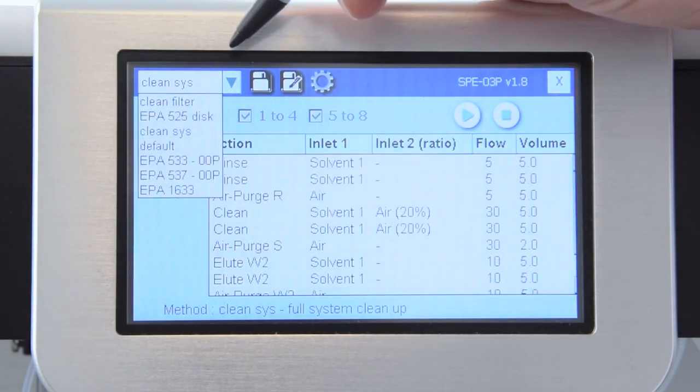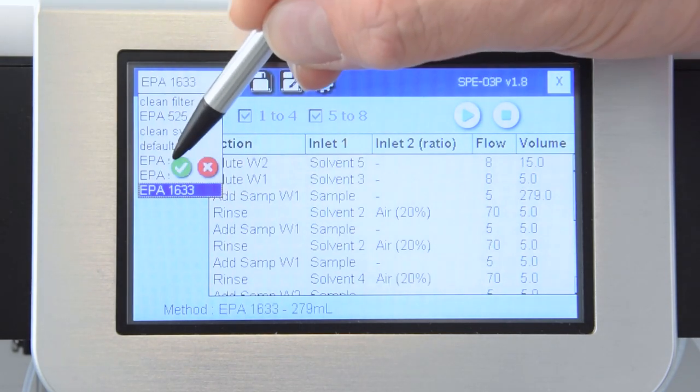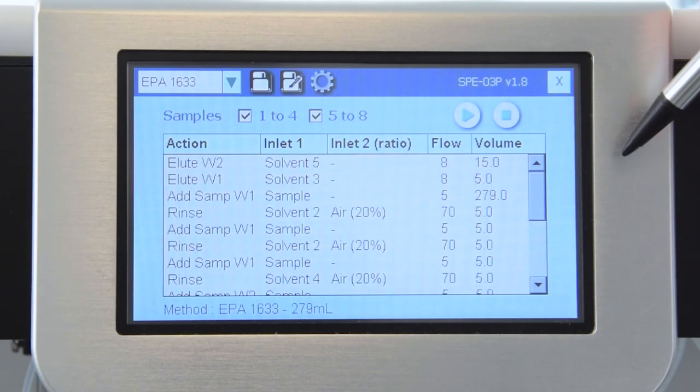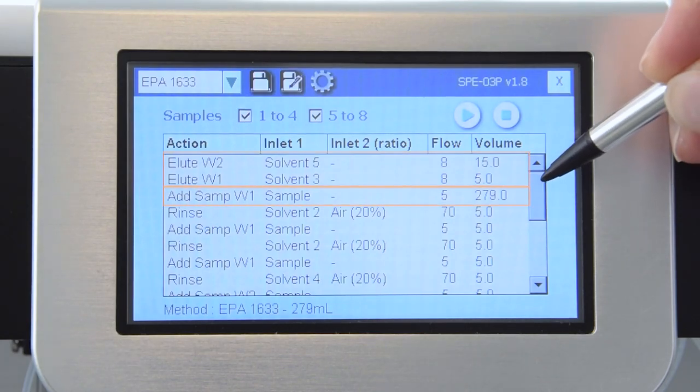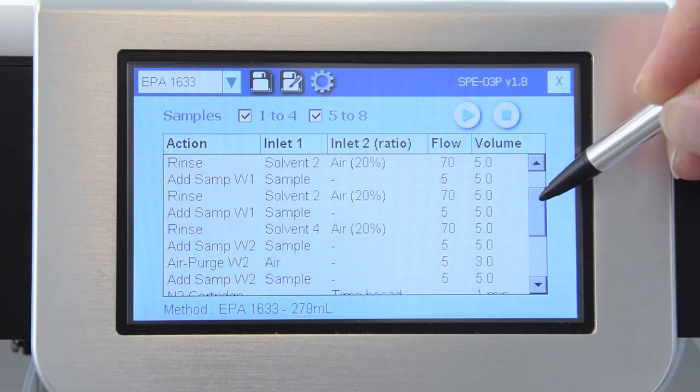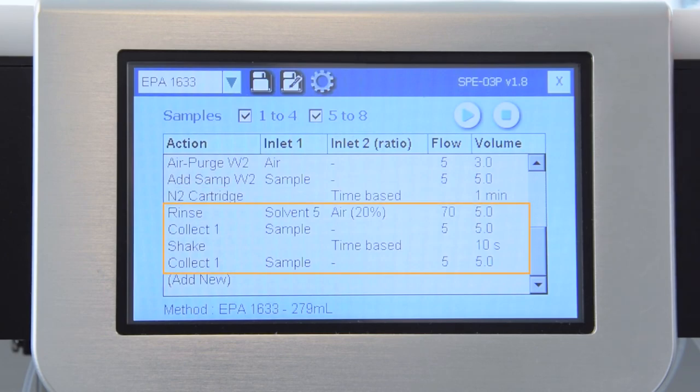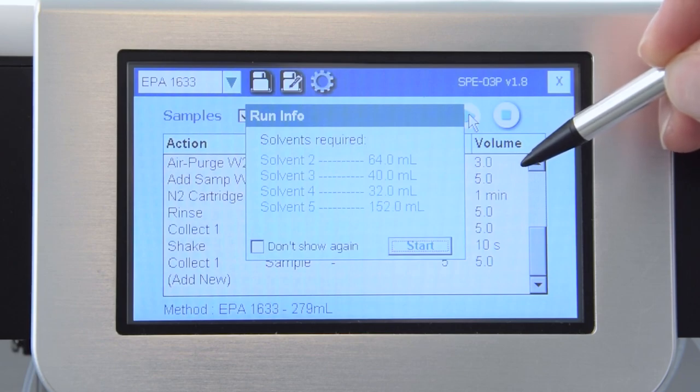Okay, let's see how these samples run. Now that the SPE03 is fully set up, let me bring up the built-in EPA method 1633. In accordance with the EPA procedure, the method consists of five main steps: pre-conditioning, sample loading, bottle and cartridge rinsing, nitrogen drying of the cartridges, and a final bottle rinse and dilution. To begin, simply tap start.